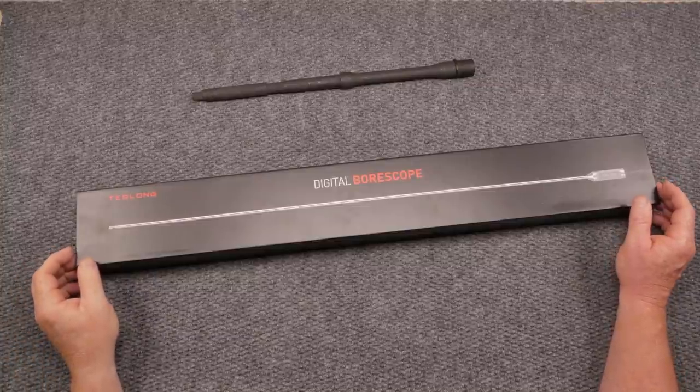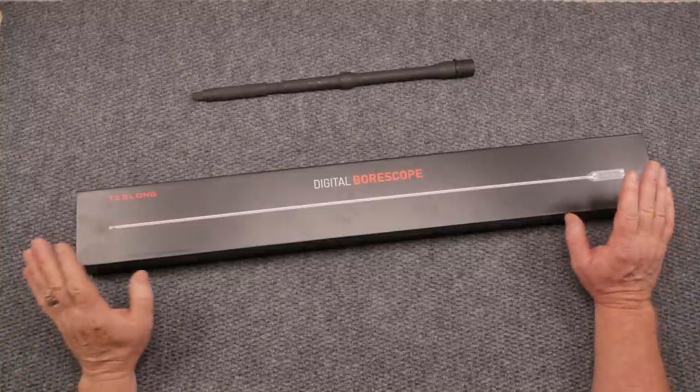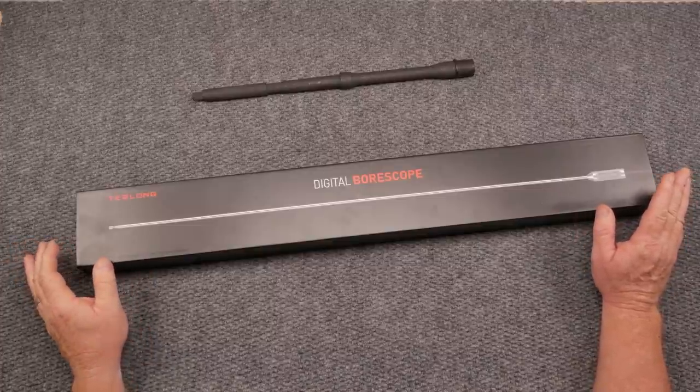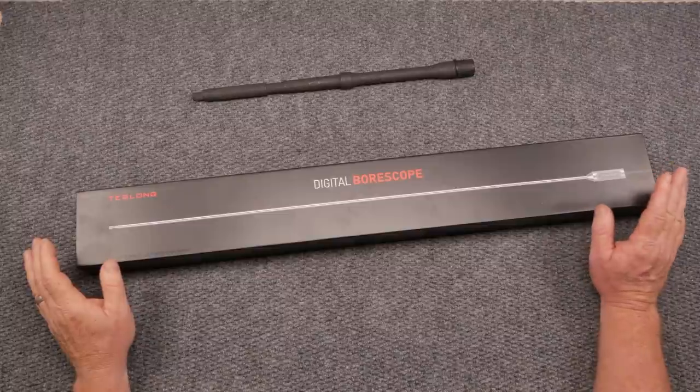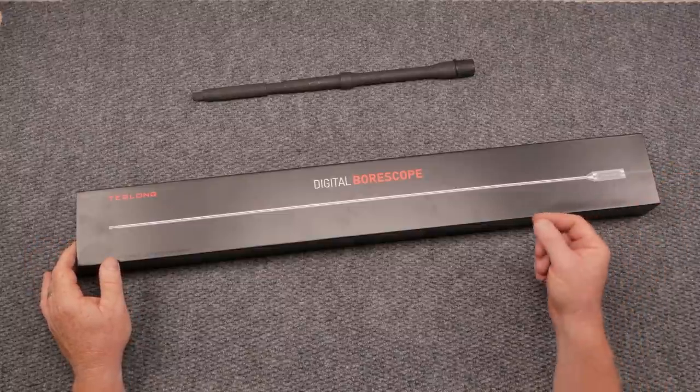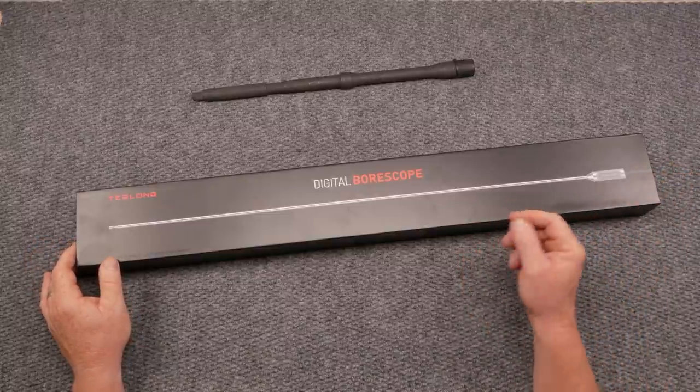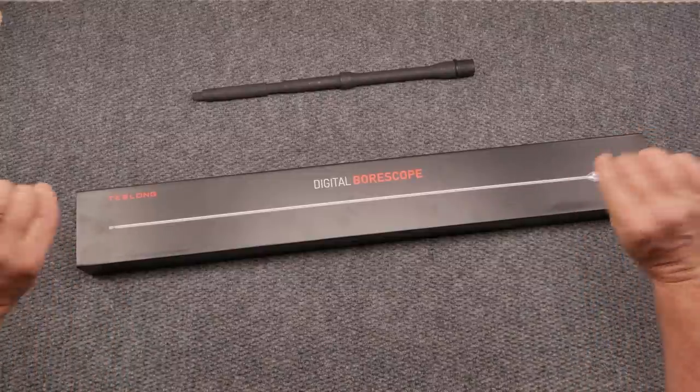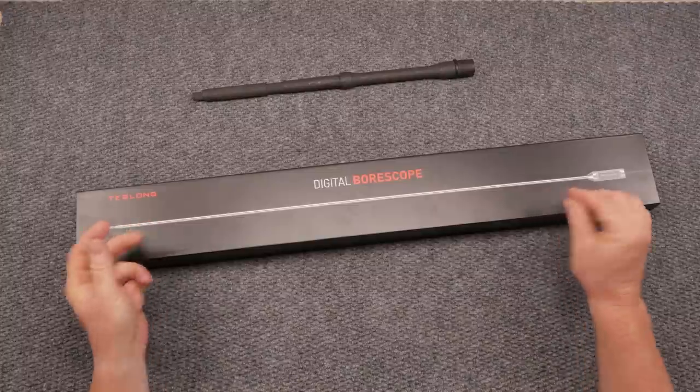All right guys, Goodboy32 here. Check it out. We're sitting here on the review table and in front of me, I've got a new product by the company called Teslong. Now, if you've followed my channel for any length of time, you know that I do the barrel reviews. I use the Teslong Borescope with a 90 degree mirror. The only difference is that one has a flexible shaft on it where the camera is attached to it.